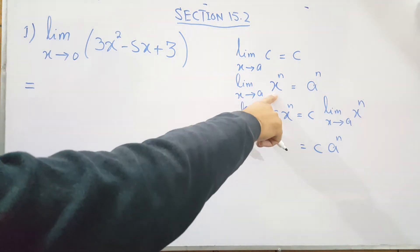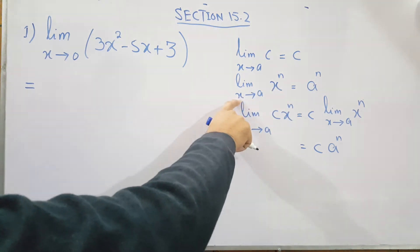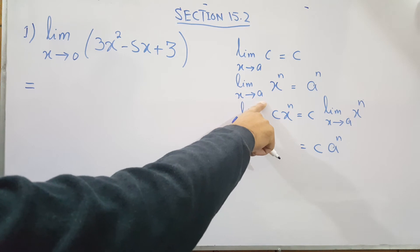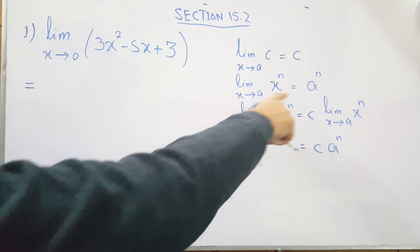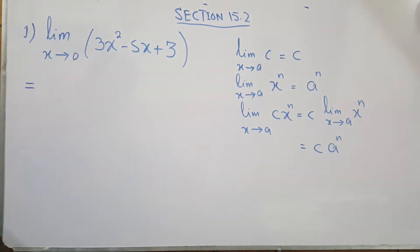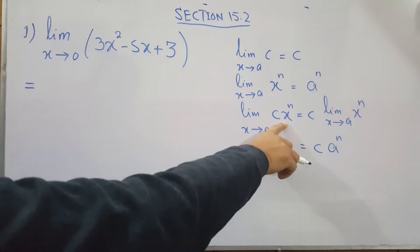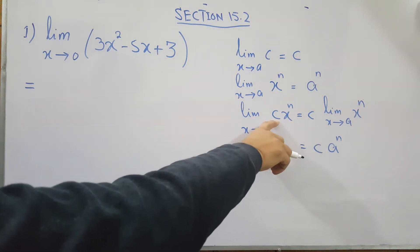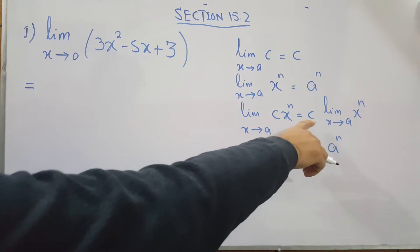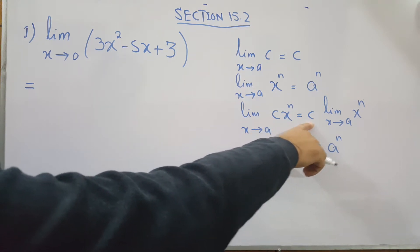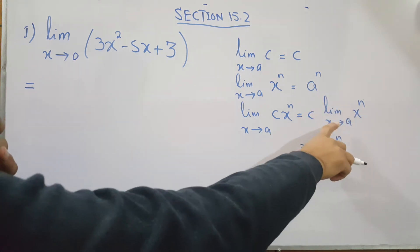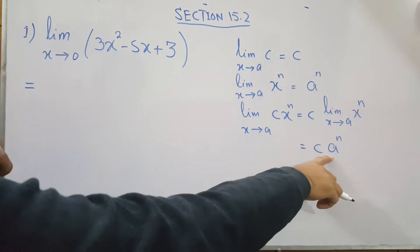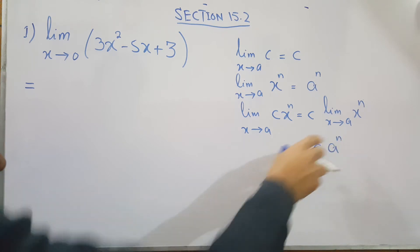The next rule is: if you have x to the power of something and x approaches to a, then just replace the x with that value a. So that becomes a to the power n. Similarly, if x to a power is multiplied by a constant, you can take out the constant and apply the limit on the x term only, giving you c times a to the power n.